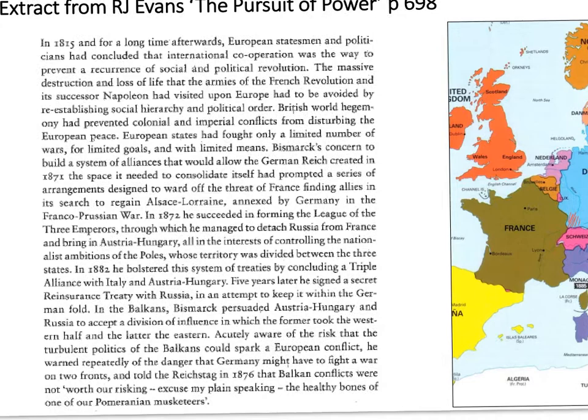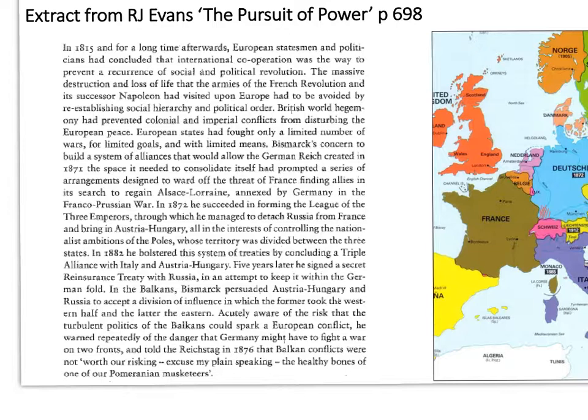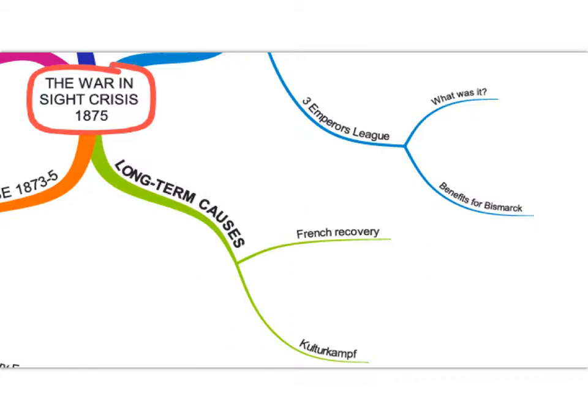All of that is explored by Evans in that text, which talks about detaching Russia from France, bringing in Austria-Hungary, and the fear of France finding allies in its search to regain Alsace-Lorraine. Hopefully that helps you understand the context. Let's move on and focus now on the long-term causes of the War in Sight crisis.